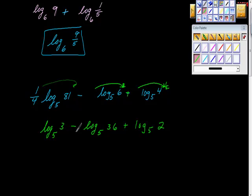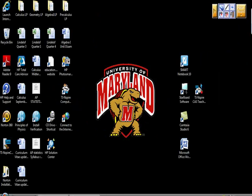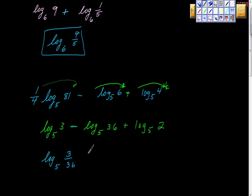I'm going to just do this piece right here. We have same bases, this negative sign right here means that we're going to have division. This is the second rule, the quotient property. So we're going to get log base 5 of 3 over 36, right. 3 over 36, and 3 over 36 is 1 twelfth. Plus log base 5 of 2, right.